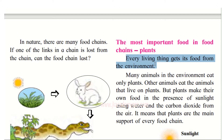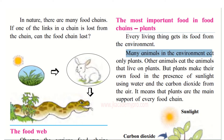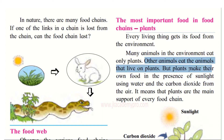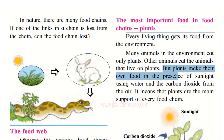Everything from the smallest insect to the elephant gets its food from the environment. Many animals eat only plants — the deer and the rabbit eat only plants. But there are other animals like the tiger eating the deer and the snake eating the rabbit, which depend on the animals that eat plants.